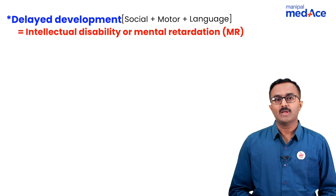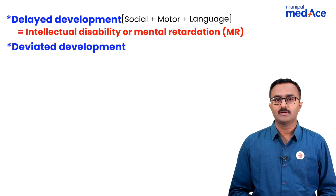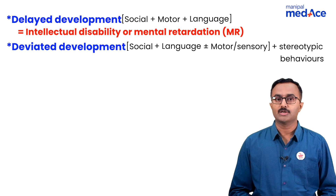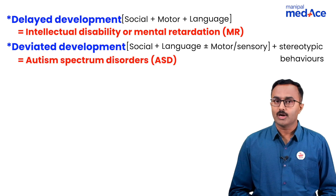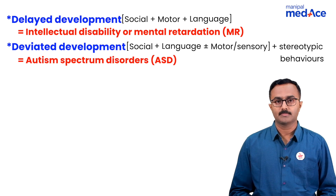When there is a deviated development rather than delayed development, which is again in motor, language, and social milestones, it is referred to as autism spectrum disorders, which also includes stereotypic behaviors.